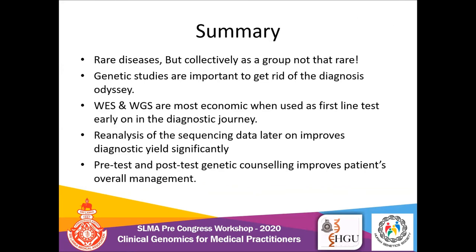In summary, these are rare diseases individually, but collectively as a group they are not that rare. Genetic studies are important to resolve the diagnostic odyssey that these children are stuck in. Whole exome sequencing and whole genome sequencing are most economical when used as first-line tests early on in the diagnostic journey, and re-analysis of sequencing data later on improves diagnostic yield significantly. Pre-test and post-test genetic counseling improves patients' overall management — that is very, very important.